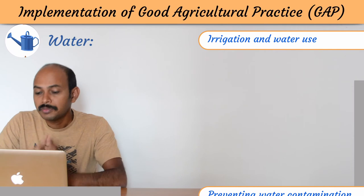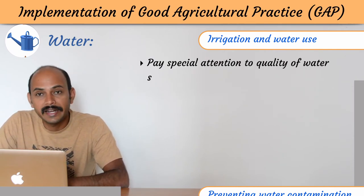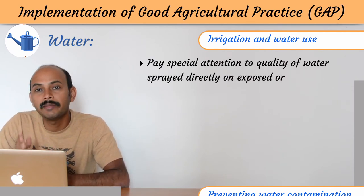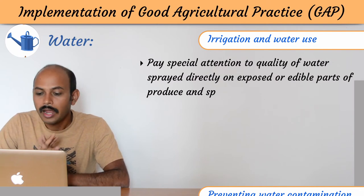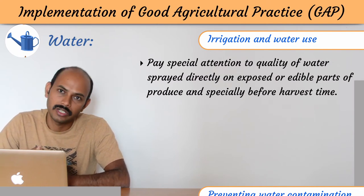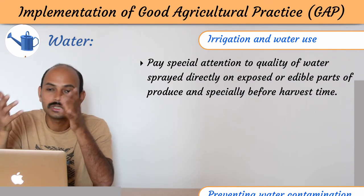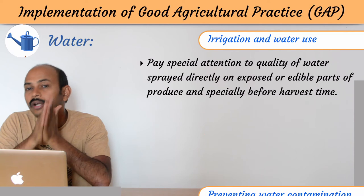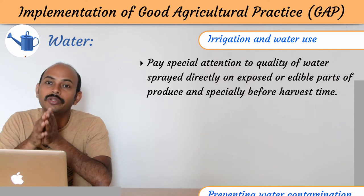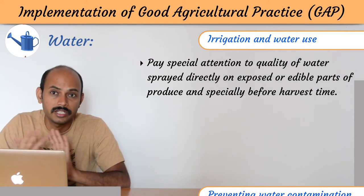Pay special attention to the quality of water spread directly on exposed or edible parts of the produce, especially before harvesting time. If you are sprinkling water on fruits or other produce, the quality of that water should be checked properly and it should be contamination free.